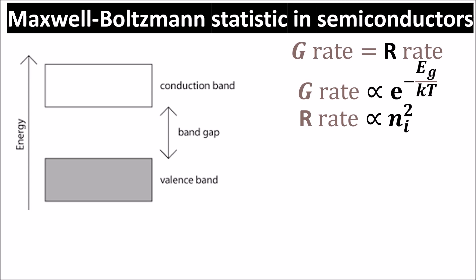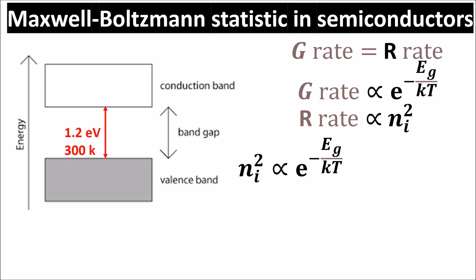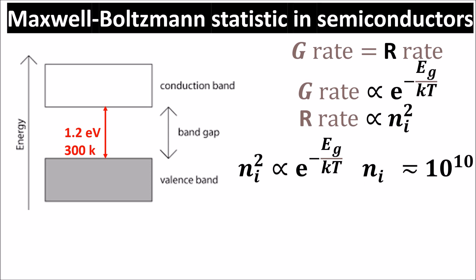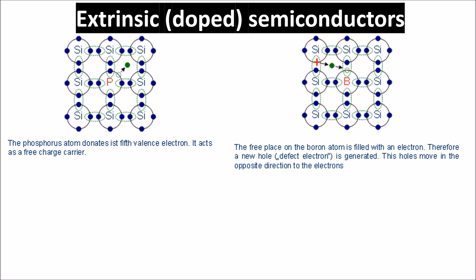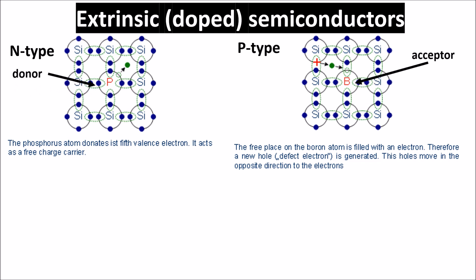It follows that we have a relation between the intrinsic concentration Ni and the energy gap of the semiconductor. In silicon, the energy gap at room temperature is 1.2 electron volts, so we can calculate the intrinsic concentration, which is on the order of magnitude of 10 to the power of 10. In an extrinsic semiconductor, we put a dopant, creating an extra electron in N-type and an extra hole in P-type. This atom is called a donor, and the other is called an acceptor. We know the level of dopant we put in the silicon lattice, so in N-type the negative carrier N equals the number of donors, and in P-type the positive carrier P equals the number of acceptors.